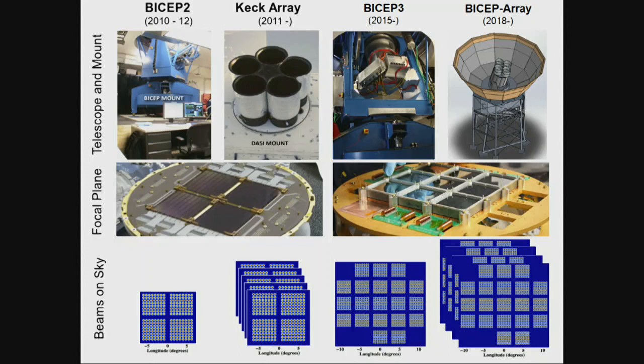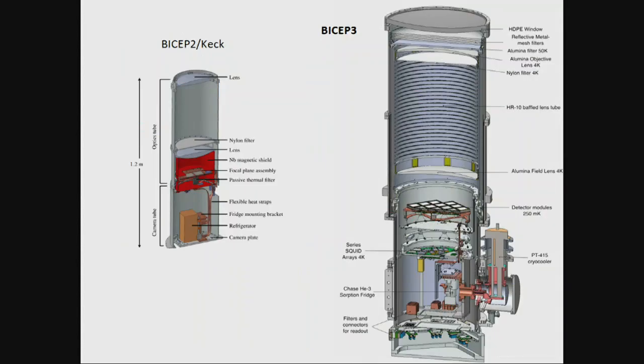So where are we going? We want to add more and more receivers for more sensitivity. This shows the big jump we had to make from BICEP2 to Keck — if you don't put things to appropriate scale you don't appreciate what we went through. That incurred a lot of challenges — infrared loading, developing all-new infrared filters transparent in our band but opaque in the infrared, bigger lenses, anti-reflection coatings that still work at 4 Kelvin.